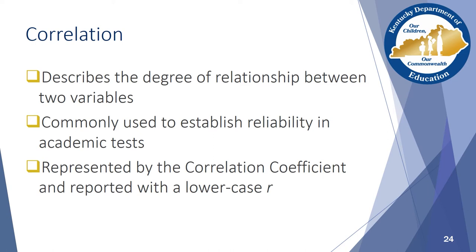In the reliability model, a sample test is given to a group of students, and then given to them again without instruction in between. If the test is reliable, then the two sets of scores will have a high level of agreement, or a high correlation. If the test is not reliable, the two sets of scores will have a low correlation. This calculation is often seen in studies that use teacher-created assessments rather than established standardized assessments in their collection protocol.